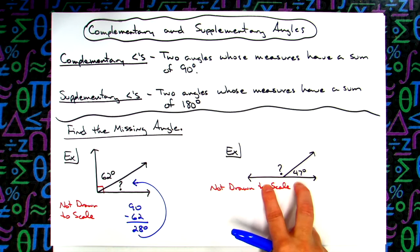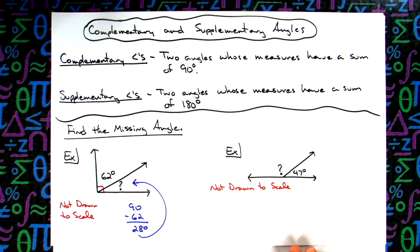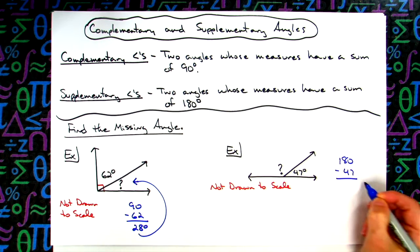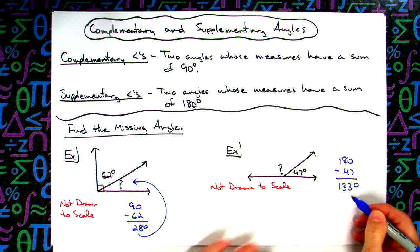The second example over here, we've got this straight line or a linear pair. Two angles that add up to 180 is a set of supplementary angles. So there again we take 180 and subtract that 47.